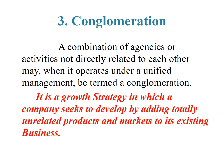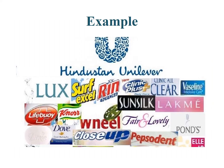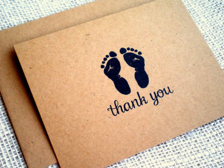The third type of integration is conglomeration. A combination of agencies or activities not directly related to each other, when operating under a unified management, can be termed conglomeration. For example, Hindustan Unilever Limited and Delhi Cloth and General Mills, which produce cloth and Vanaspati ghee, have combined together — this is a best example of conglomeration. In an agribusiness conglomerate, food grains, food processing units, retail chains, cloth mills, electronic goods, and Vanaspati products are manufactured or sold under one roof. Hindustan Unilever is the best example of conglomeration integration. Thank you friends for listening — do comment for any queries.